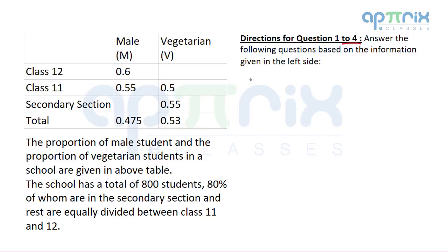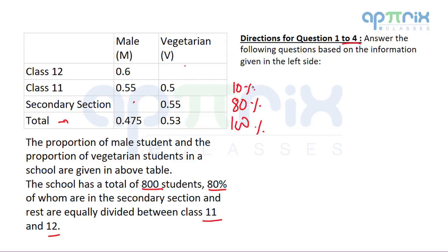In this question, there are four questions and the information is given on the left hand side. There is a table where we are given information about males and vegetarians in a particular class, and the total value has been given as well. There are two values which are missing. The proportion of male students and vegetarian students in a school are given in the above table. The school has a total of 800 students, 80% of whom are in secondary section and the rest are equally divided between class 11 and class 12. So total is 100%, this will be 80%, and these will be 10% and 10%.